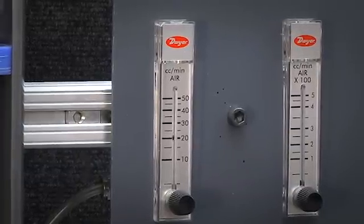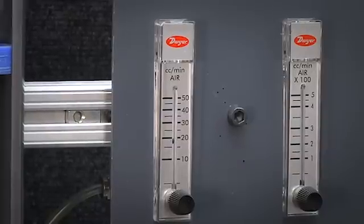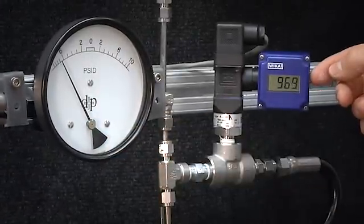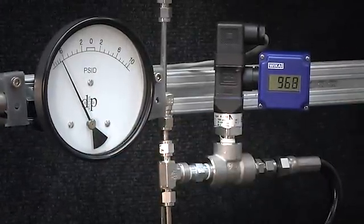So we are now at the range of about 20 cc's per minute and we are still at 7 psi over pressure and still at 969, about the same pressure that we had before.